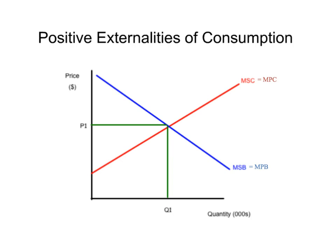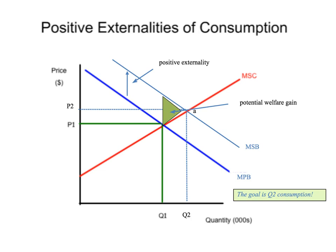The example we're going to use is health care. Here is the marginal private benefit — but what moved out? The marginal social benefit moved out. Why? Because there is a positive externality — there is a positive externality of you being healthier to me. The social benefit to all those around you is greater than the private benefit. Even though you're healthy, you're ensuring that the other people around you remain healthy as well. We have a new socially optimal point at A, at P2Q2. This triangle represents the potential welfare gain as a result of the positive externality of consumption.